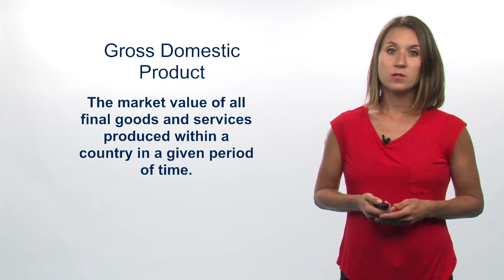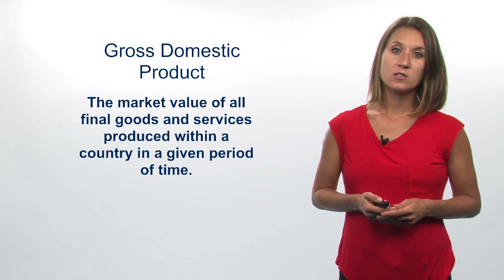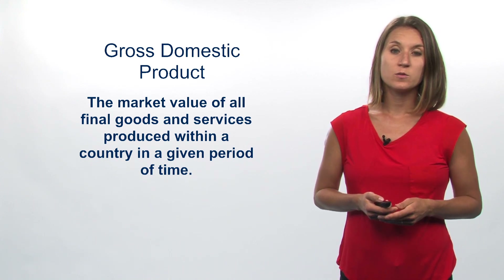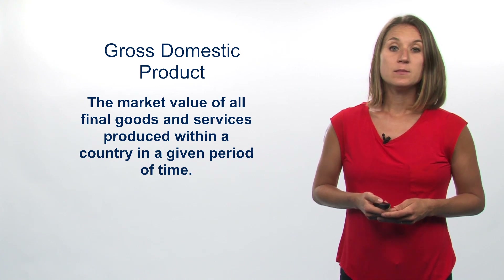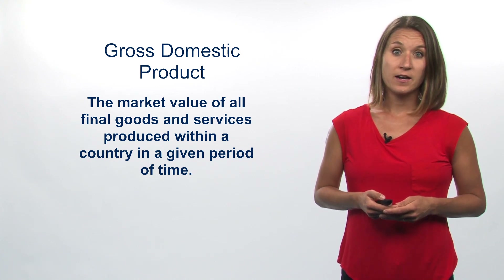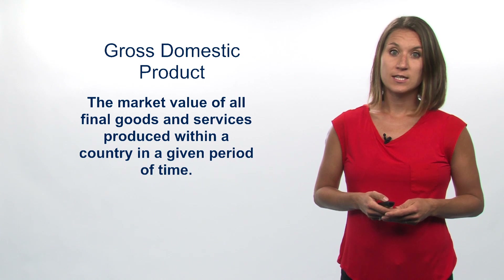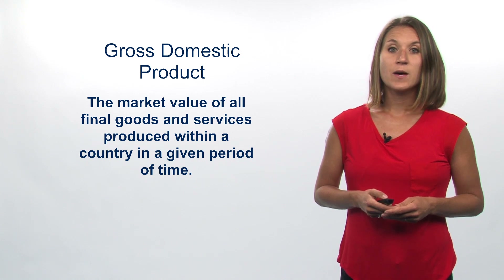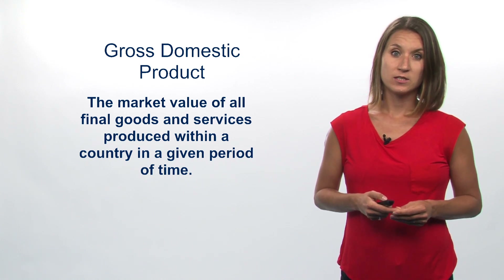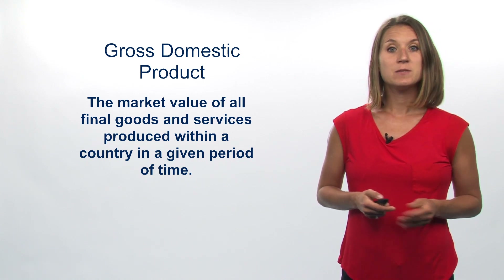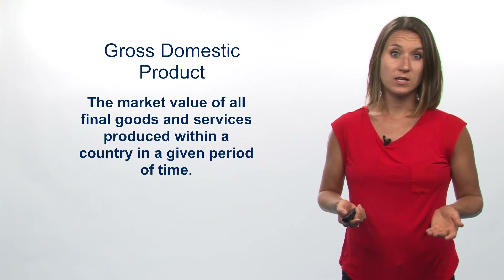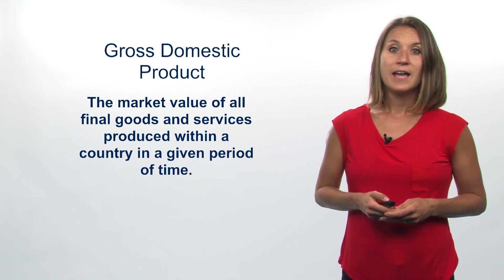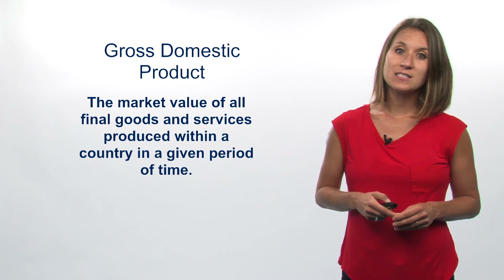GDP measures the market value of all final goods and services that are produced within an economy in a given period of time. This measure allows economists to compare how an economy is doing across time as well as how it is doing compared to other countries. It's specifically measuring the production of goods and services within the given economy and it's telling us both about the income and the expenditure of the economy.